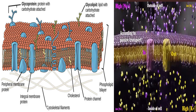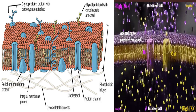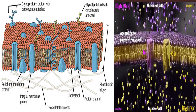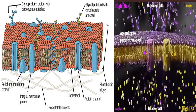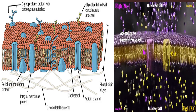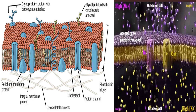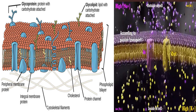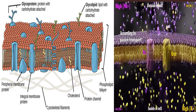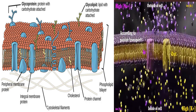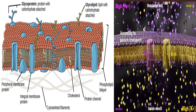Plasma membrane ranges from 5 to 10 nm in thickness. For comparison, human red blood cells visible via light microscopy are approximately 8 µm wide, or approximately 1000 times wider than a plasma membrane. The proportion of proteins, lipids, and carbohydrates in the plasma membrane vary with cell type. For example, myelin contains 18% proteins and 76% lipids, while the mitochondrial inner membrane contains 76% proteins and 24% lipids. The main fabric of the membrane is composed of amphiphilic or dual-loving phospholipid molecules.